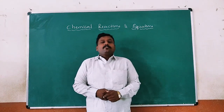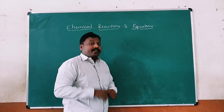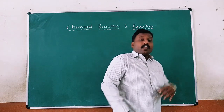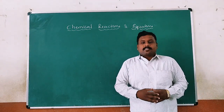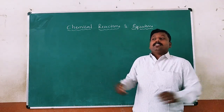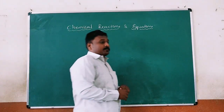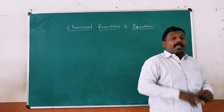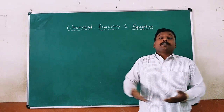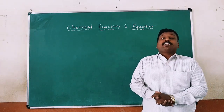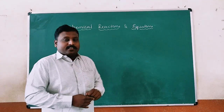My dear students, all of you have already learned what is meant by chemical reaction, the types of chemical reactions, and how to write chemical equations in your previous classes. But in this chapter, we will discuss further. First of all, chemical reactions can be seen in two different types of change: one is physical change and the second one is chemical change.